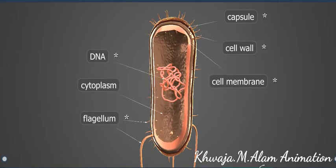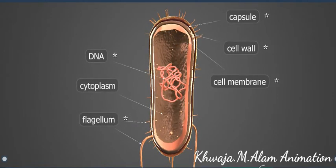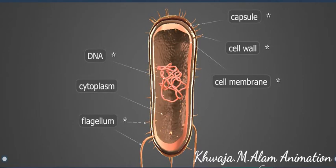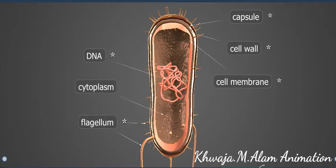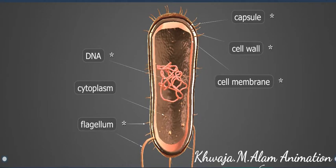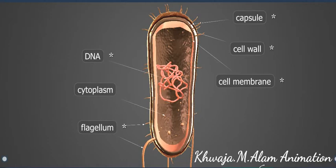The cytoplasm is enclosed in the cell membrane. All bacteria have a cell wall, which is tough and rigid and is made from proteins and polysaccharides. It provides the cells with structural support and protection.